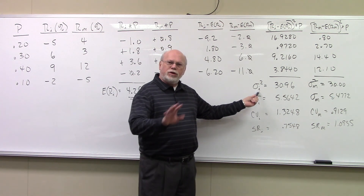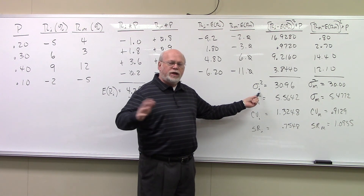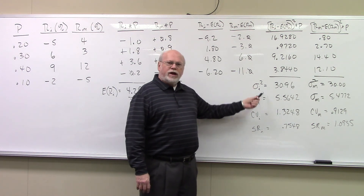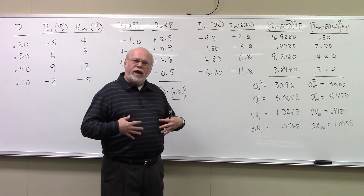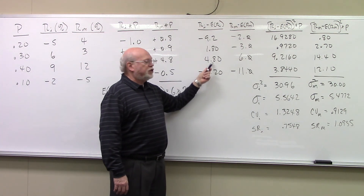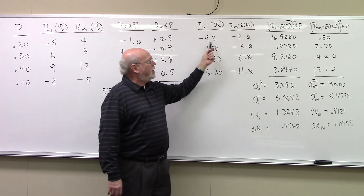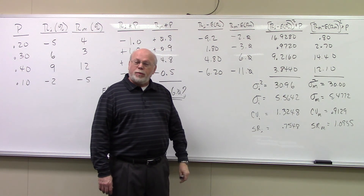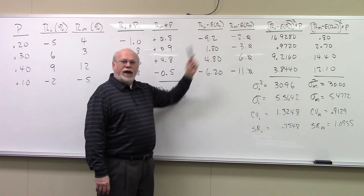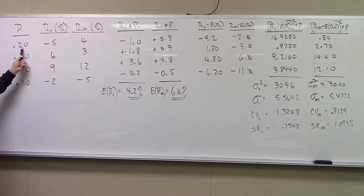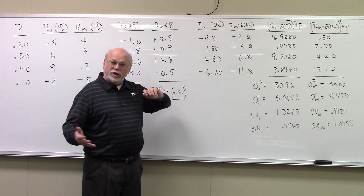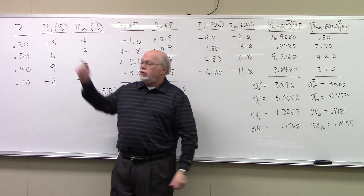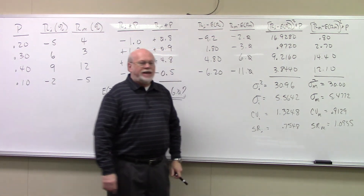Variance doesn't have a unit value — it's not a percentage, not a decimal. Variance is the mean of the squared deviations. Since this is a probability distribution, we calculate a weighted average mean. We take the deviations, square them, and multiply by the probability of occurrence. So for the first case, negative 9.2 — there's a 20% chance the deviation will be 9.2. We square it: negative 9.2 squared gives a positive number, multiplied by the probability 0.2, giving 16.9280.